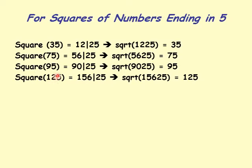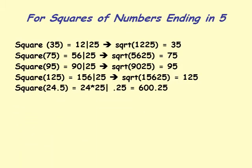We know square of 125 is 15625. The part 156 equals 12 times 13, so square root of 15625 is 125. The 25 gives me 5 at the end, and 156 is 12 times 13, giving 12 on the left.